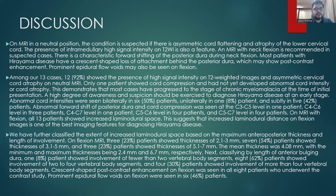On MRI with flexion, all 13 patients showed increased laminodural space, suggesting this is one of the best imaging features for diagnosing Hirayama disease. We further classified the extent based on maximum AP thickness and length of involvement. Three patients showed thickness of 2.1–3 mm, seven patients 3.1–5 mm, and three patients 5.1–7 mm, with a mean thickness of 4.08 mm. Classifying by craniocaudal length, one patient had fewer than two vertebral body segments involved, eight had two to four segments, and four had more than four segments. Crescent-shaped post-contrast enhancement on flexion was seen in all eight contrast study patients, and prominent epidural flow voids were seen in approximately 46% of patients.